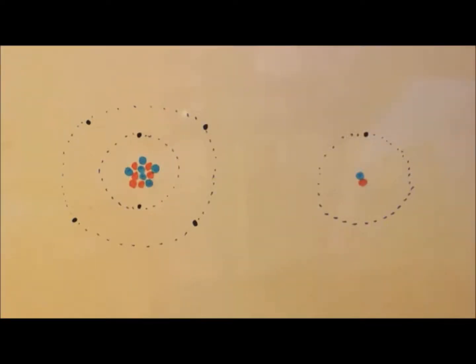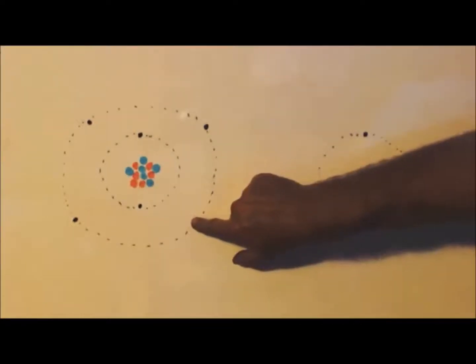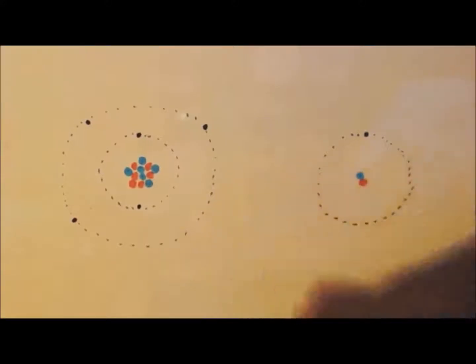If you make that into a positive ion, you would remove one of the electrons. Now that's positive - it still has a bunch of protons and neutrons.